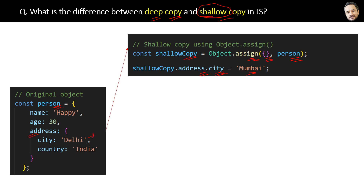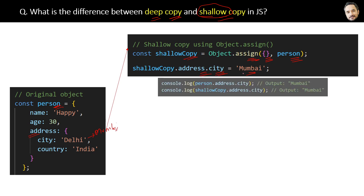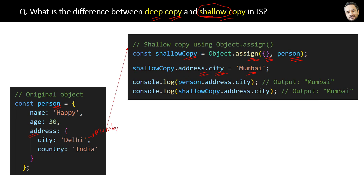Now let's assign a new city, Mumbai, to the address object of the shallow copy object. When you log the city of the cloned shallow copy object, it will be Mumbai — that is fine and expected. But the problem is that the city of the original person object is also modified and set to Mumbai, which was Delhi earlier.